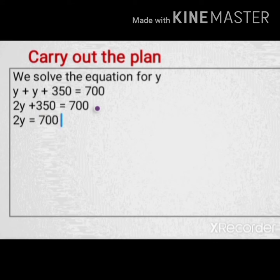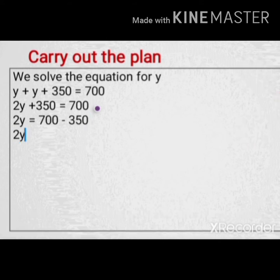The inverse operation of positive equals negative. So the positive 350 becomes negative 350. So let's continue the operation: 2Y equals 700 minus 350, which equals 350.